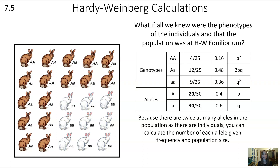Because there are twice as many alleles in the population as there are individuals, in a population of 25, there are 50 alleles total. If we know how many alleles there are total and we know the frequency of both alleles, we can figure out the total number of each. For example, 40% of alleles are big A (since p is 0.4), so 50 times 0.4 gives us 20 big A alleles. Similarly, 50 times 0.6 gives us 30 little a alleles in the population.